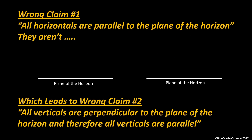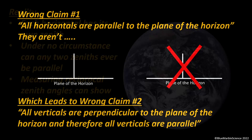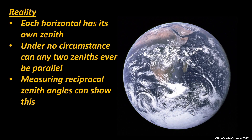That's the first wrong claim. But that leads to wrong claim number two, which is: all verticals are perpendicular to the plane of the horizon, and therefore all verticals are parallel. Nope, that is not true either. In reality, each horizontal has its own zenith. Under no circumstance can any two zeniths ever be parallel. And measuring reciprocal zenith angles can show this.